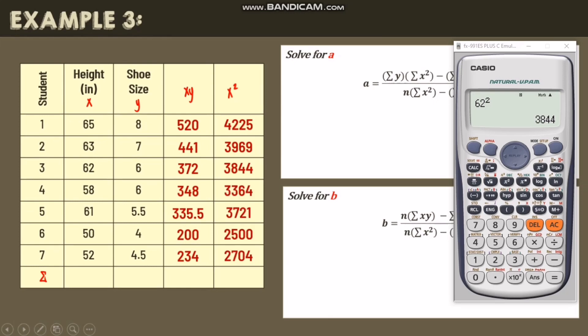Next, let's get the summations. Let's get the summation of x. So we have 65 plus 63 plus 62 plus 58 plus 61 plus 50 plus 52. So the answer is 411.